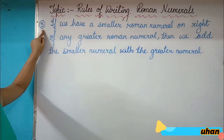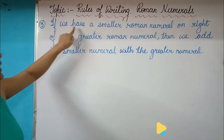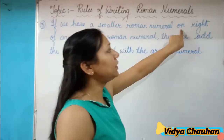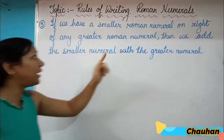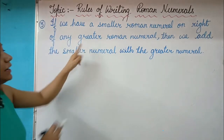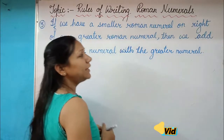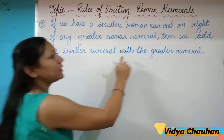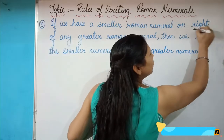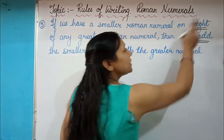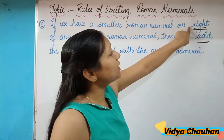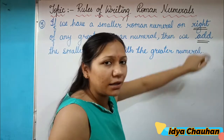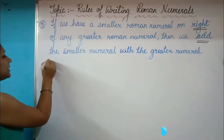Now let's discuss the third rule of writing Roman numerals. If we have a smaller Roman numeral on the right side of any greater Roman numeral, then we add the smaller numeral to the greater. In our second rule it was on the left side so we subtracted; now if the smaller numeral is on the right side we add.